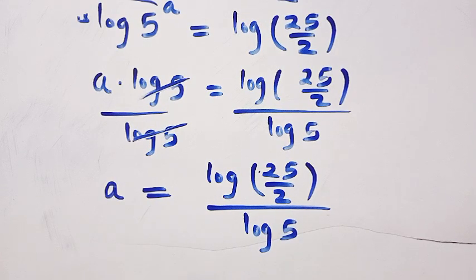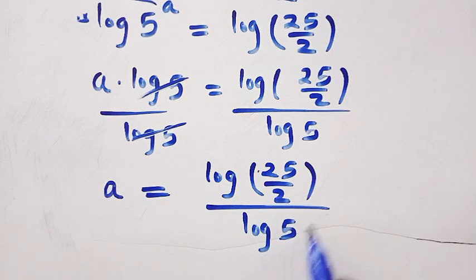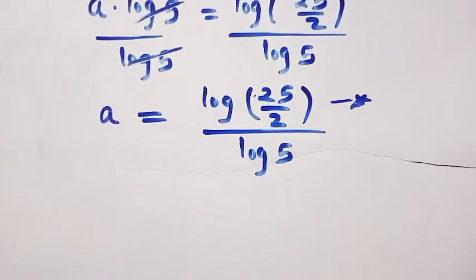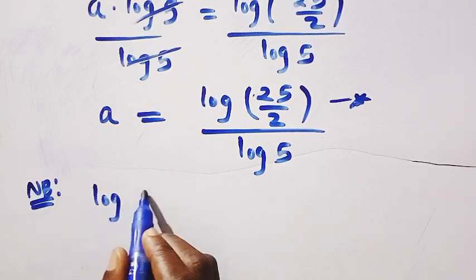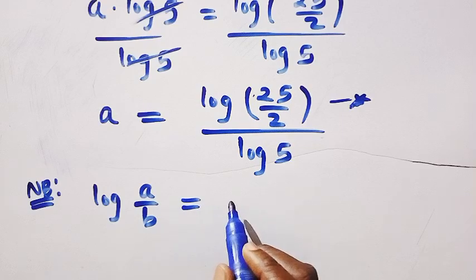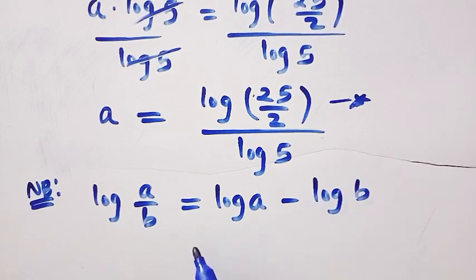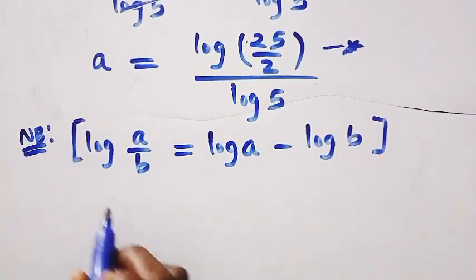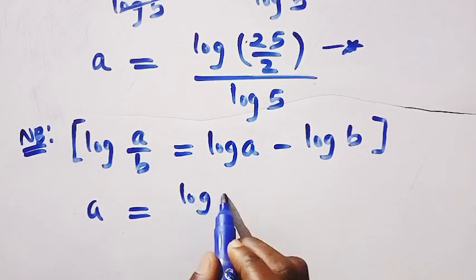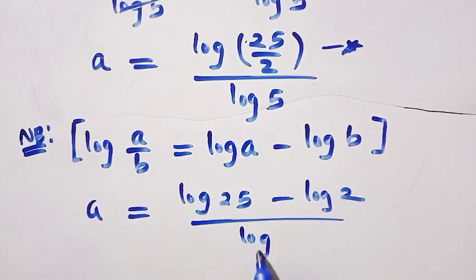So this is what we have for a, but we have to simplify this further — we cannot leave it like this. We have log(25/2). To simplify this, we note that log(a/b) equals log a minus log b. So let's apply it: a equals (log 25 minus log 2) divided by log 5.